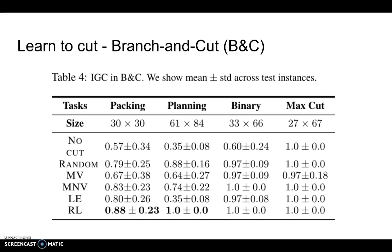Now let's look at the experiment results. In this table, each entry shows the mean and standard deviation of the IGC evaluated on the testing set. We can make several observations. The first is that in cases where we don't add any cut at all, it generally underperforms the other cases where we add even random cuts. We also see that the RL generally performs better than the other human-designed heuristics.